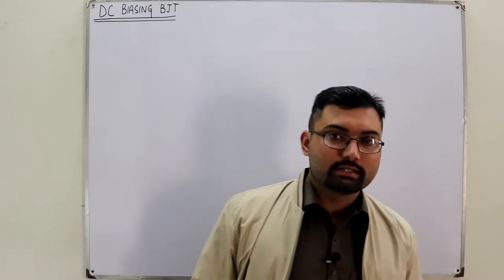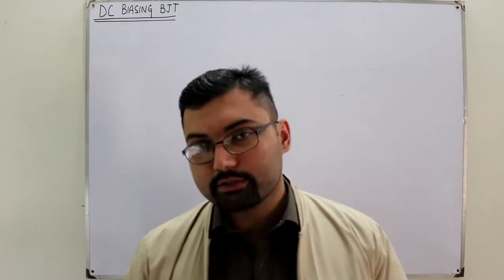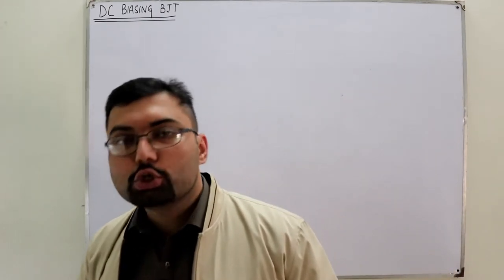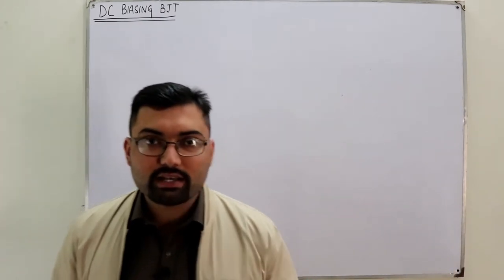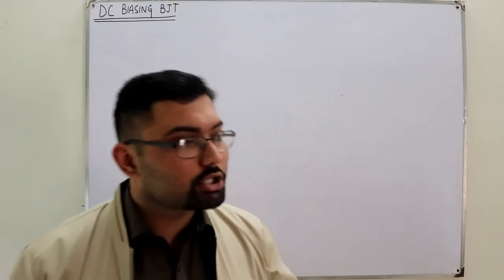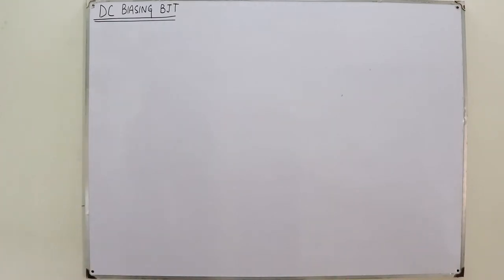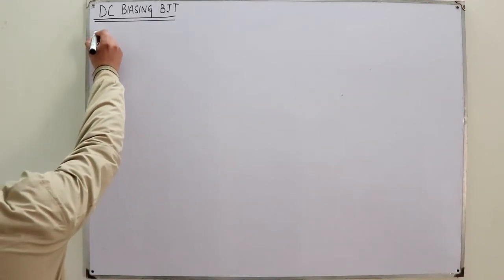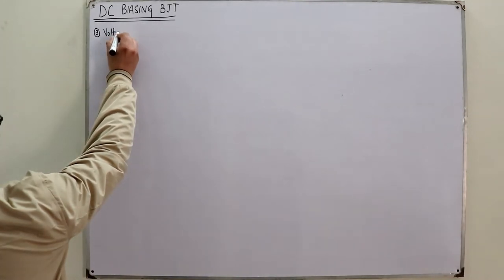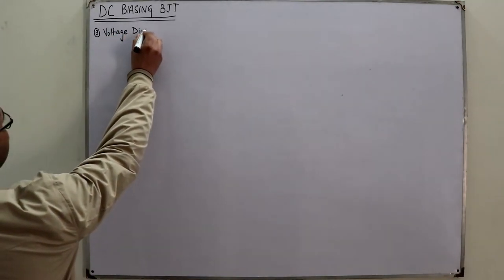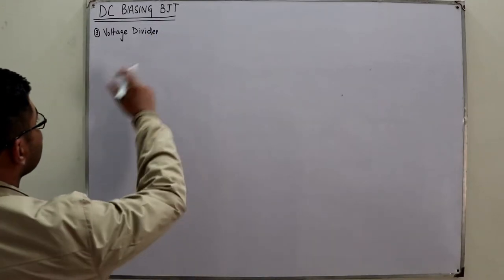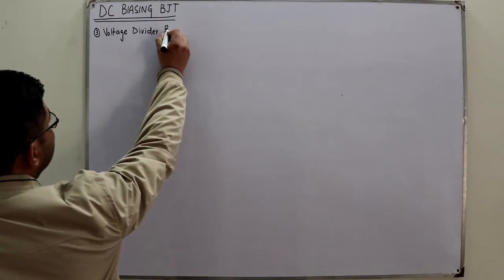Assalamu alaikum, Salah Khan here, continuing the topic of BJT biasing. We've seen fixed biasing and emitter biasing. Number three in order is the voltage divider biasing, also called self-biasing.